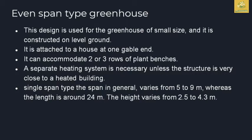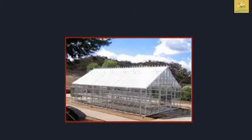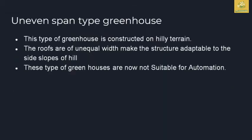The even span type greenhouse is used for small-size greenhouses on leveled ground. It is attached to a house at one gabled end and can accommodate two or three rows. A separate heating system is necessary unless the structure is very close to a heated building. The span generally varies from 5 to 9 meters, length around 24 meters, and height from 2.5 to 4.3 meters.